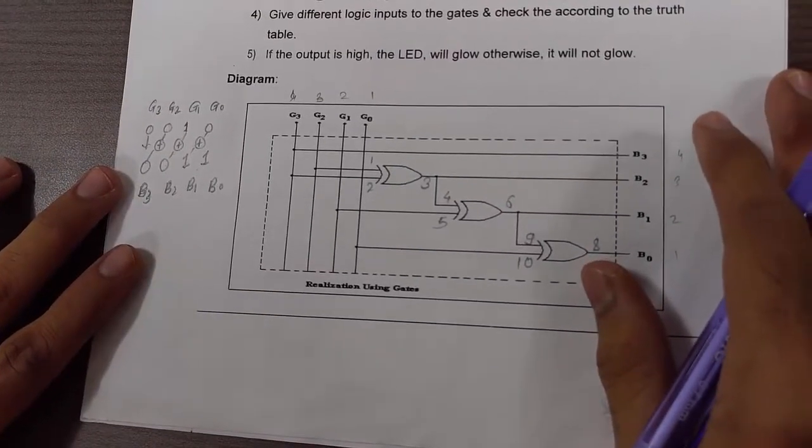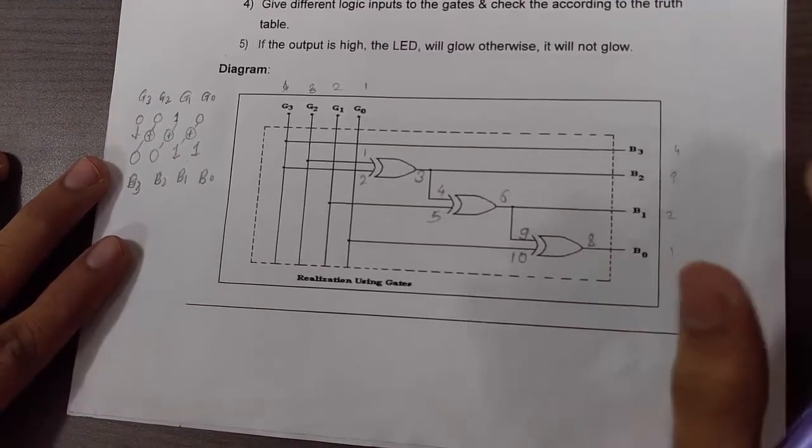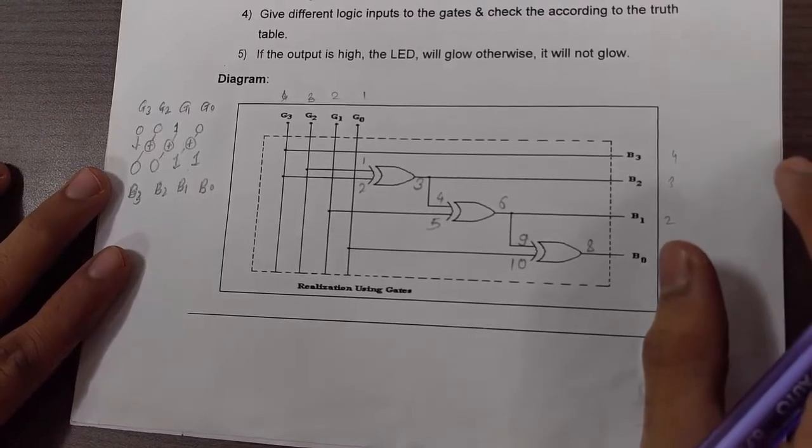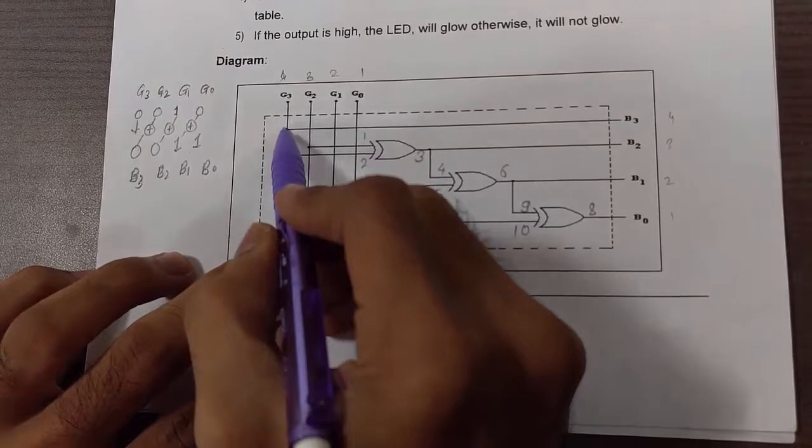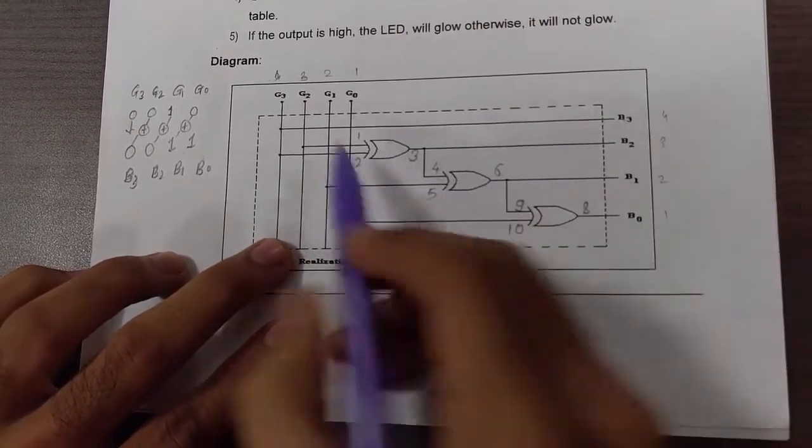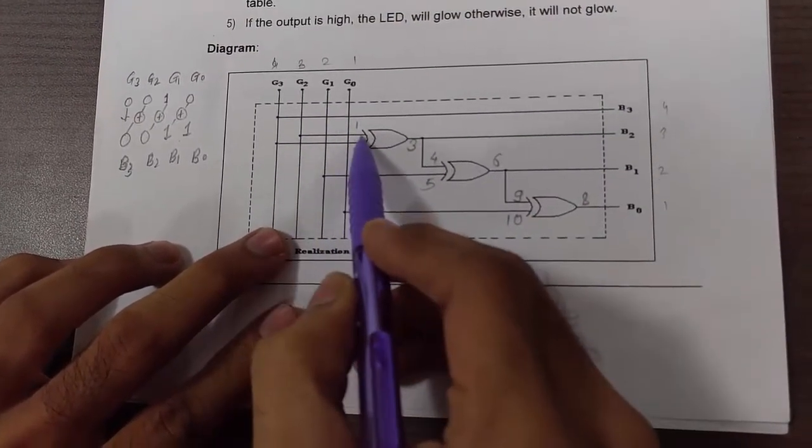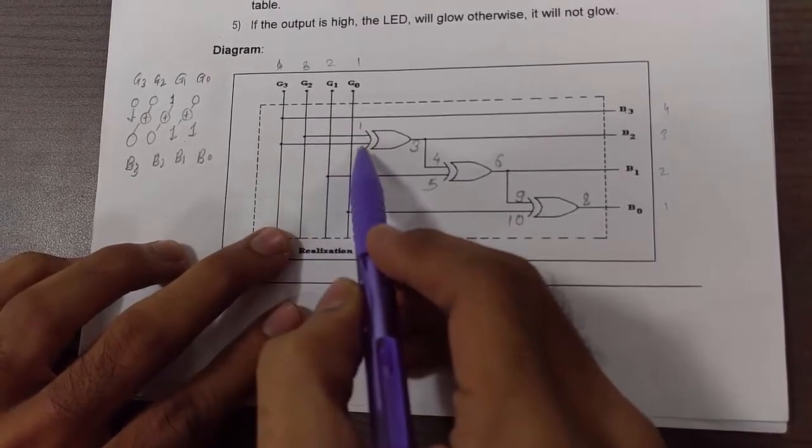So now let us understand how to implement the circuit for this grey code to binary code converter. So first we connect G3 input directly as it is to the B3 output. And we connect G2 to pin number 1 and G3 to pin number 2.